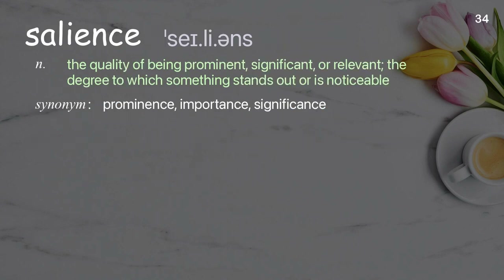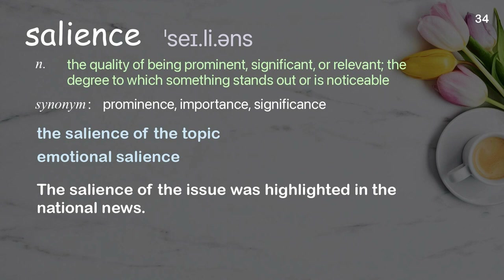Salience: the quality of being prominent, significant, or relevant; the degree to which something stands out or is noticeable. Examples: The salience of the topic. Emotional salience. The salience of the issue was highlighted in the national news.